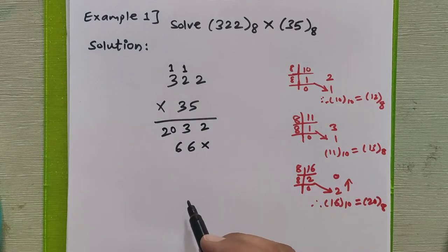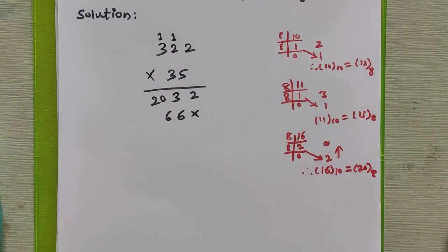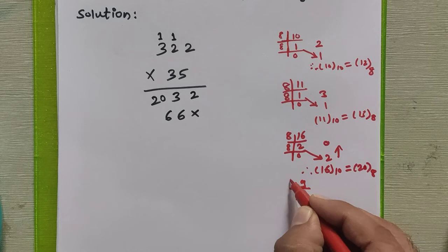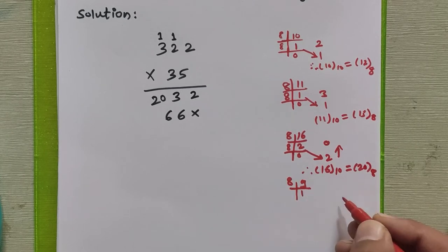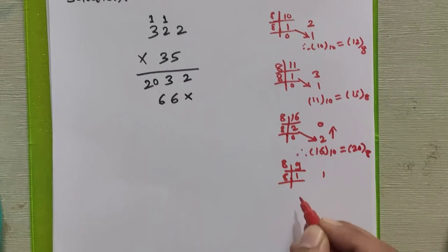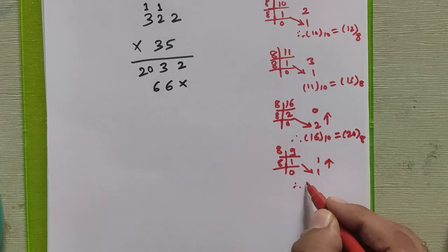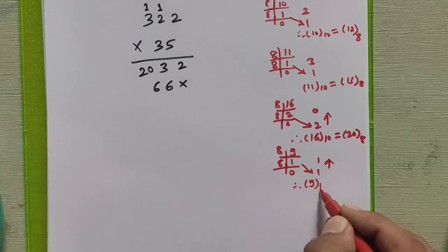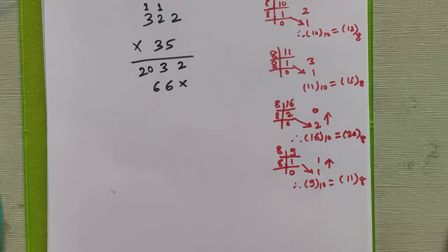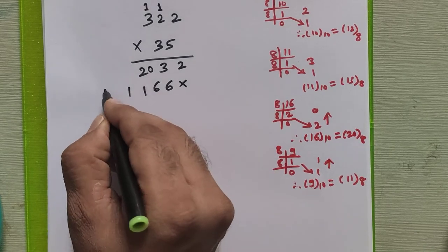3×3 is 9. Now 9 is not a valid octal digit, so we convert it: divide 9 by 8, quotient 1 remainder 1; divide 1 by 8, quotient 0 remainder 1. So 9 decimal equals 11 in octal. We use this 11 here and now add all the partial products.